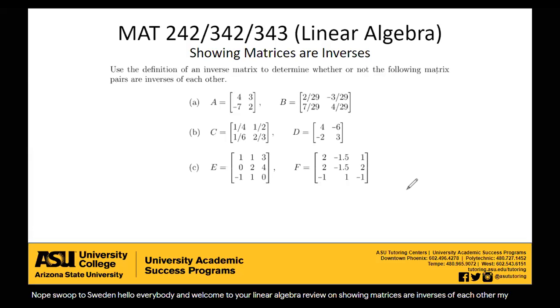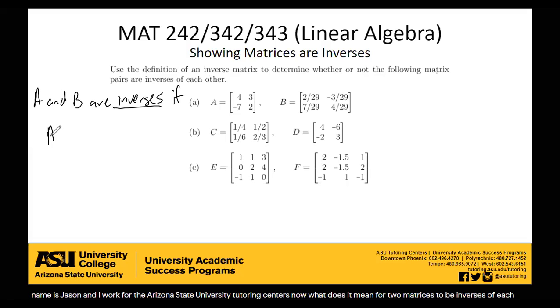Now what does it mean for two matrices to be inverses of each other? Two matrices are inverses, so we would say that A and B are inverses if A times B equals the identity matrix and B times A also equals the identity matrix. No matter which way you multiply these two matrices together, you get the identity out of it.